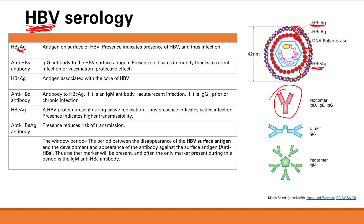The window period is the period between disappearance of the hepatitis B surface antigen — because that eventually gets eradicated — and the development and appearance of the antibody against the surface antigen. During this period, you will have neither marker present. The only marker present during the window period is the IgM anti-hepatitis B core antibody.